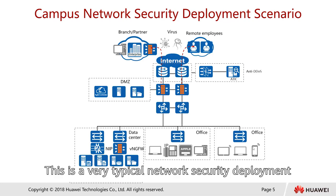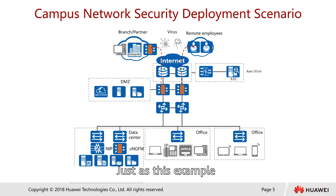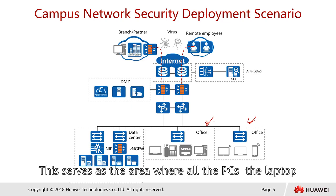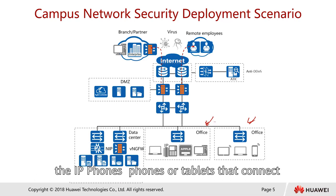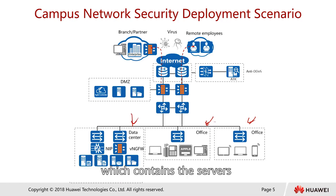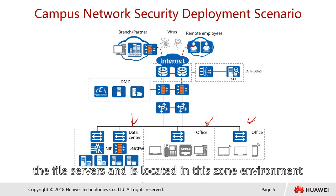This is a very typical network security deployment in the campus. Typically in the campus, first we have the office LAN. In this example, we have two different office LAN environments. This serves as the area where all the PCs, laptops, IP phones, or tablets connect in the office. We also have a zone called the data center, which usually contains the servers — the application servers, email servers, and file servers — located in this zone environment.